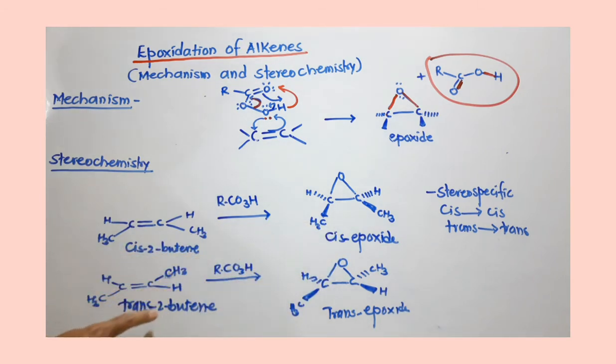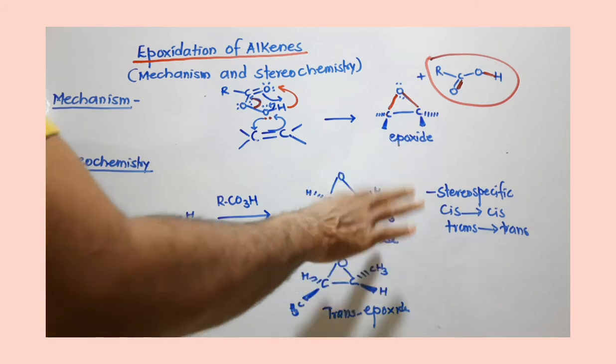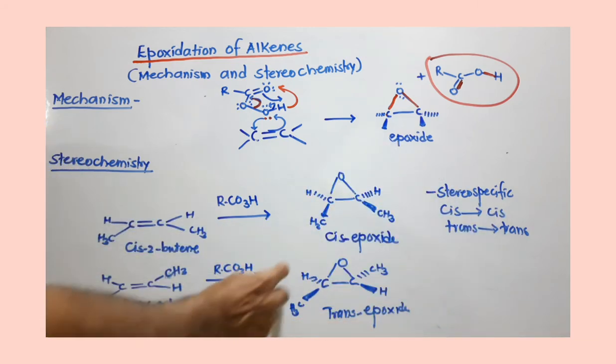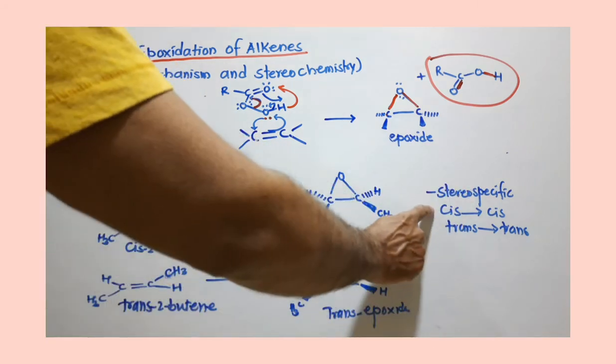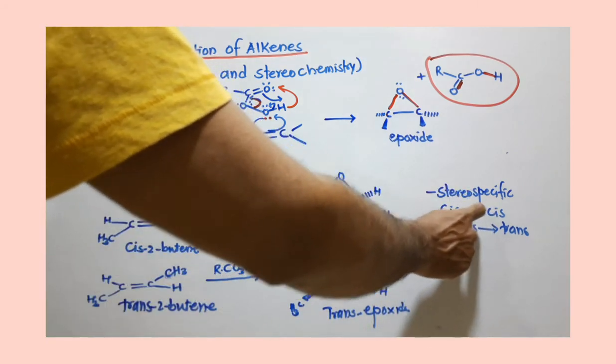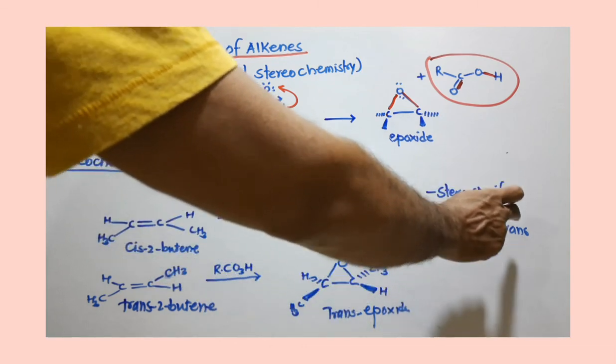Now if I use trans, I get a trans epoxide where similar groups are toward opposite sides, one is down and another is above the plane. So trans gives trans. So this reaction is a stereospecific reaction, you have to remember. Cis alkene gives cis epoxide and trans alkene gives trans epoxide.